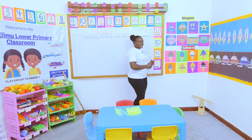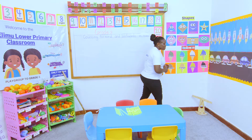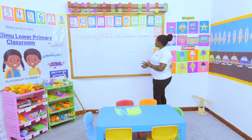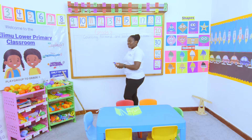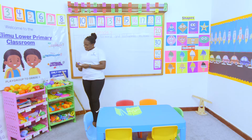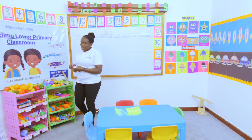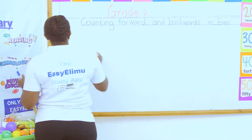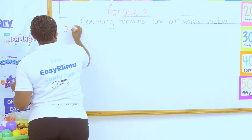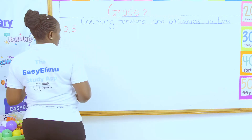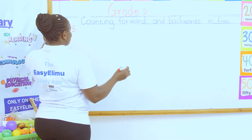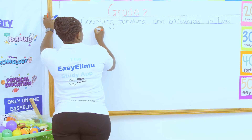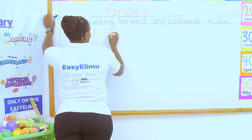We have done counting in ones and counting in twos, both forward and backward. Now we are counting in fives. Who can remind me the rule? Those in grade one — remind me the rule. We say: in fives, we must have a zero and a five.